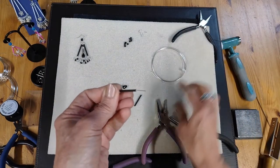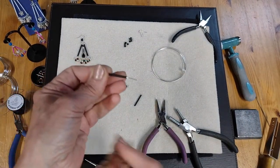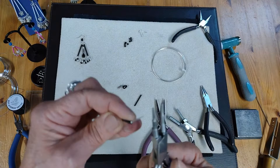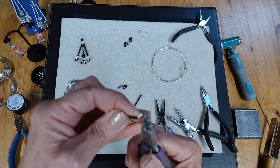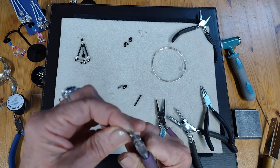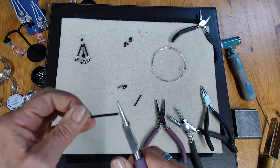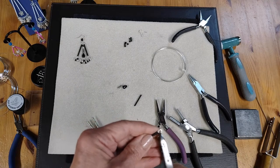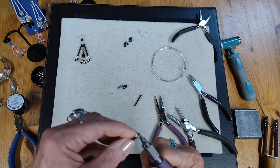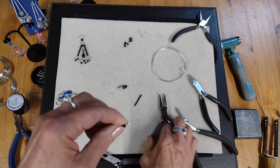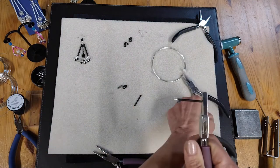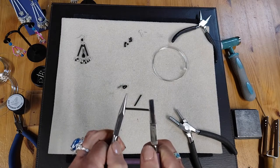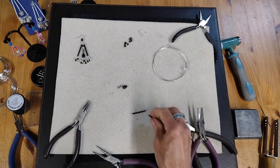I'm going to just use my snipe nose pliers or chain nose pliers to bend that to a right angle so that I can create again another centralized link at the other end. So it's got two links at the end of these coils. Now make sure that these links are going to sit completely on the same plane as well. So you hold one with one plier and hold the other and just twist them to make sure that they're sitting at the same angle or on the same plane.